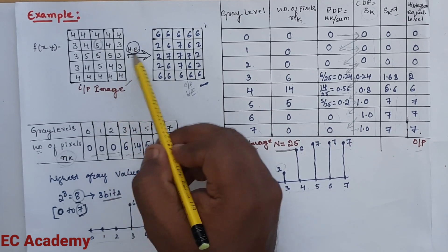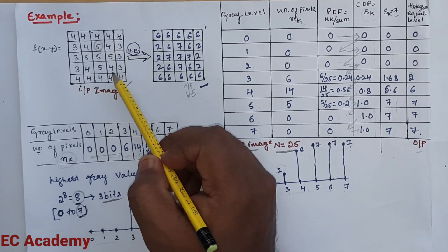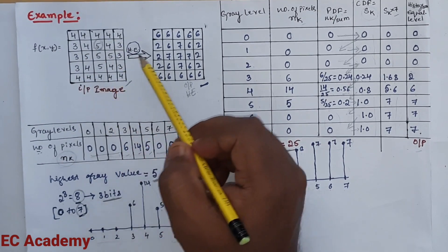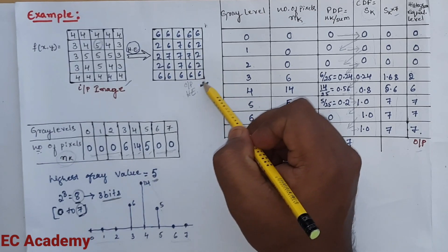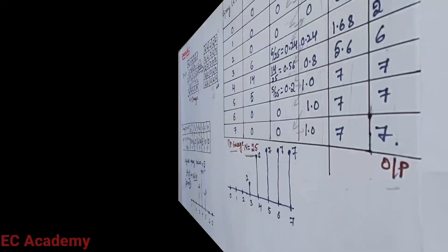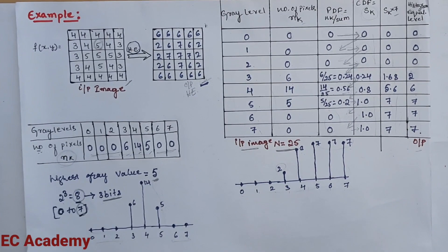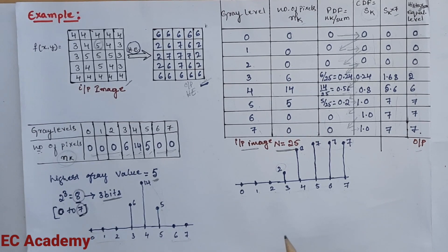This is the input image, and after performing histogram equalization we get the enhanced output image. This concludes the topic of histogram equalization in digital images. Hope you have understood the topic. Thank you.